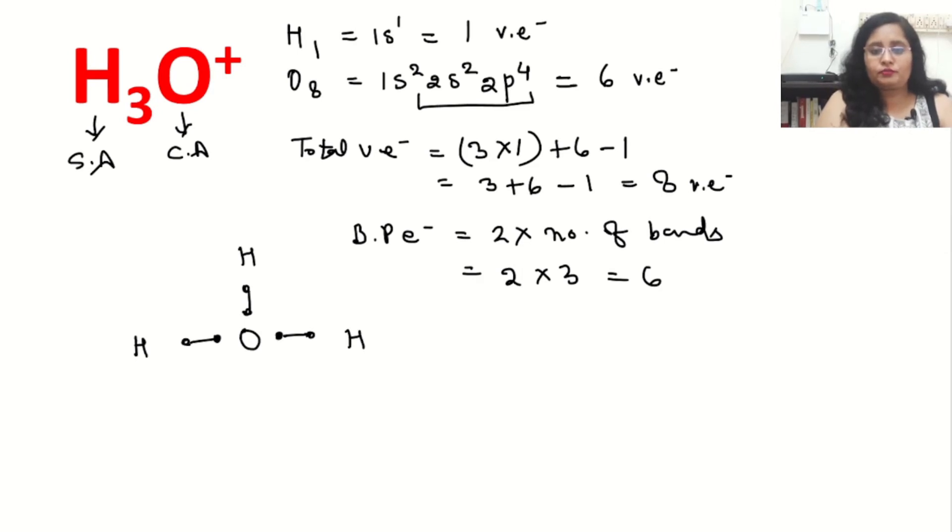Now after that, we will count lone pair of electrons. It will be total valence electrons minus bond pair electrons. So total valence electrons in our case is 8 minus bond pair is 6, so how many is left over? Two. This is the lone pair of electrons.